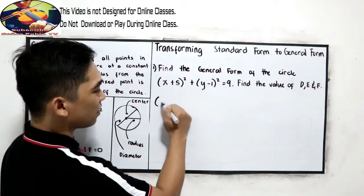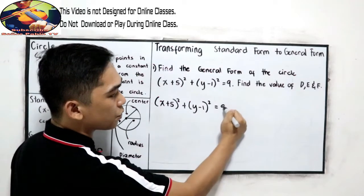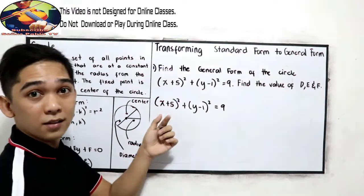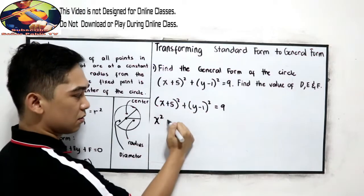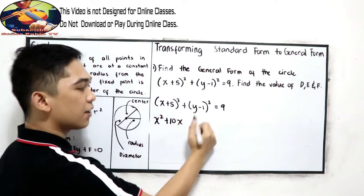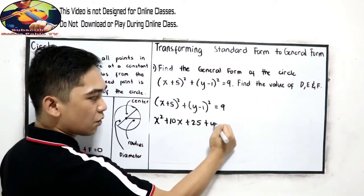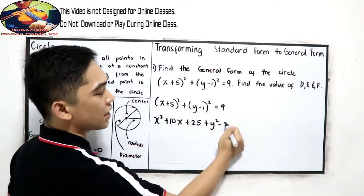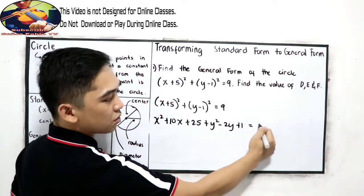So, copy: x plus 5 raised to 2 plus y minus 1 raised to 2 is equal to 9. Again, the square of a binomial — so let us expand. Square the first term, that is x squared. Multiply the first and second terms times 2: positive 10x. And square the second term: 5 squared, positive 25. Plus, square the first term: y squared. Multiply the first and second term times 2: negative 2y. Square the second term: positive 1. Is equal to positive 9.